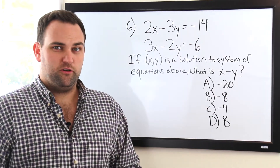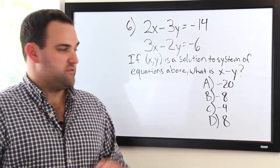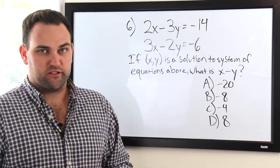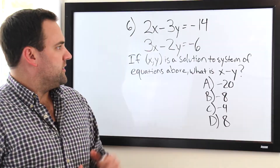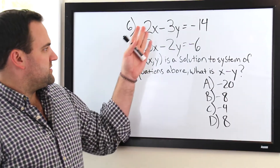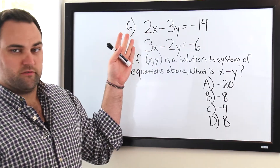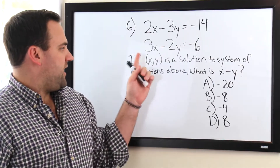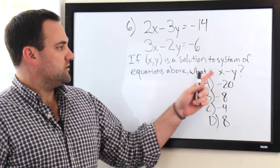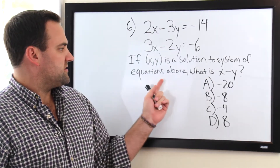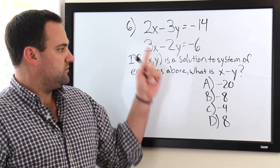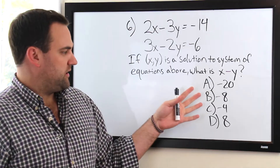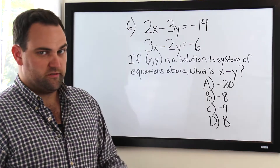Here's a question from the new SAT math — it's going to be on one of your no-calculator sections. What we have here is two systems of equations, and it says: if (x, y) is a solution to the system of equations above, what is x minus y? And it gives us our four choices.